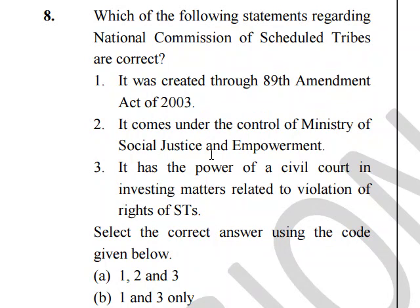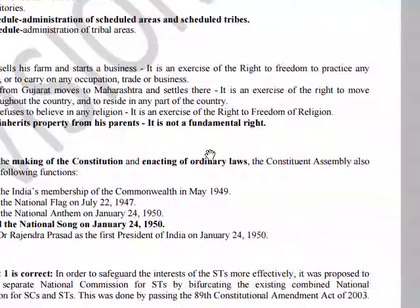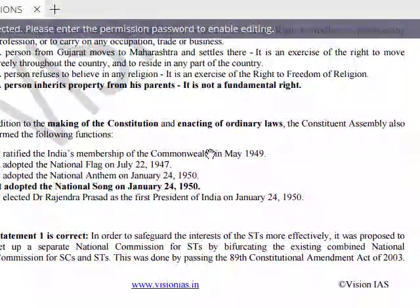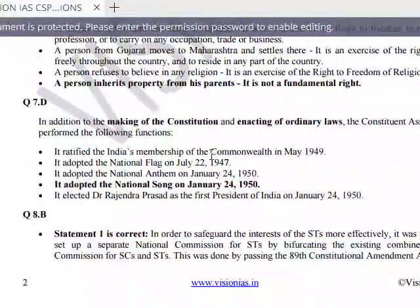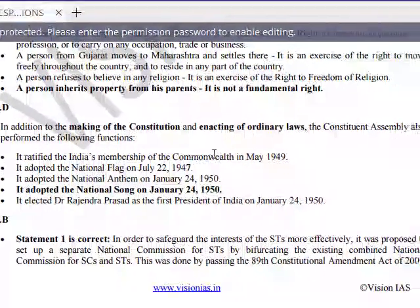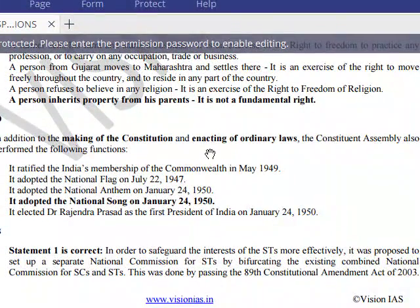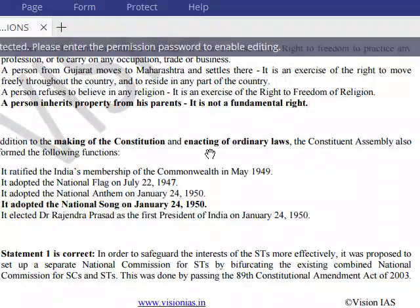Statement three: it has the powers of a civil court in investigating matters related to violation of rights of STs — correct. So statements one and three are correct. The explanation: to safeguard ST rights more effectively, it was proposed to set up a separate National Commission for STs by separating it from the existing combined National Commission for SCs and STs, done by passing the 89th Constitutional Amendment Act of 2003.